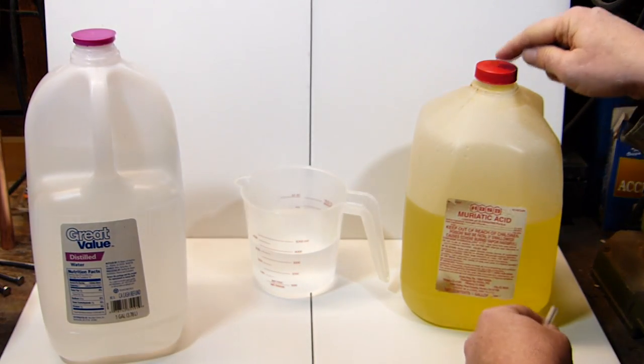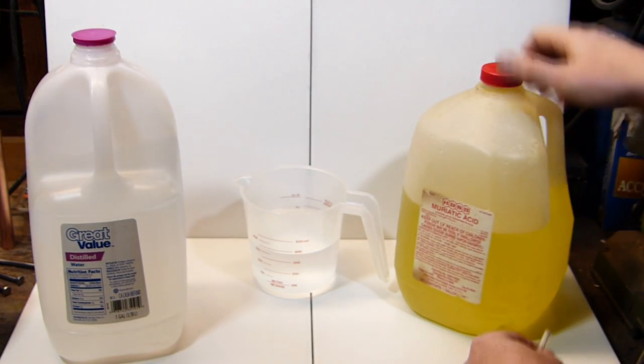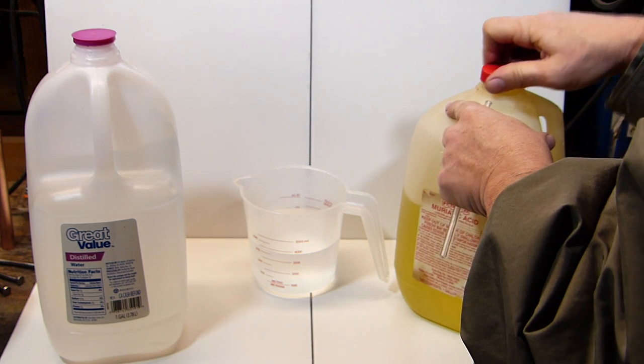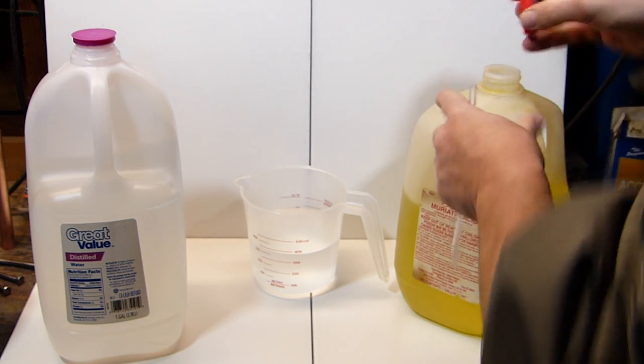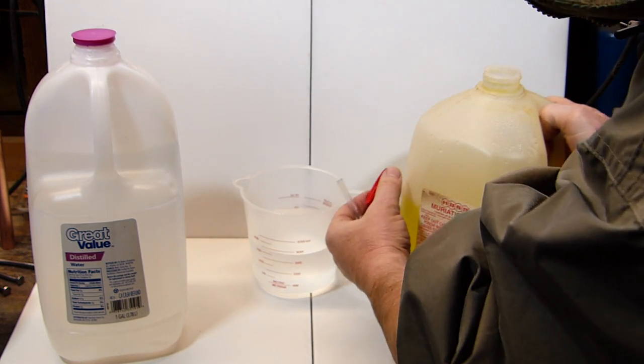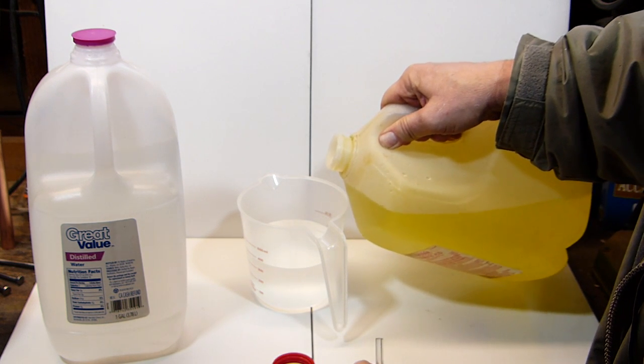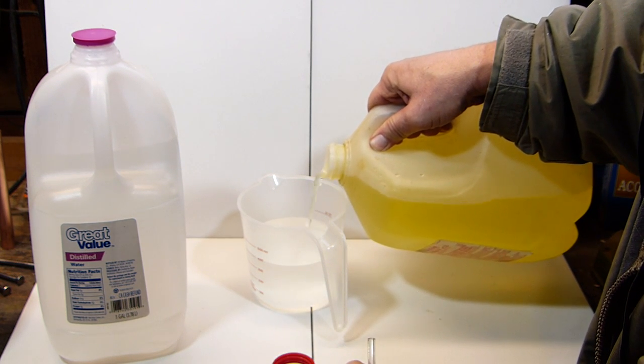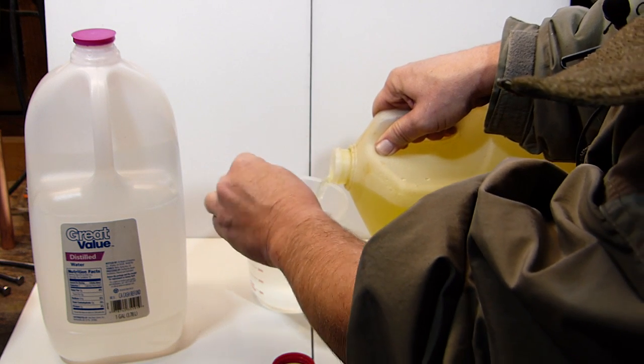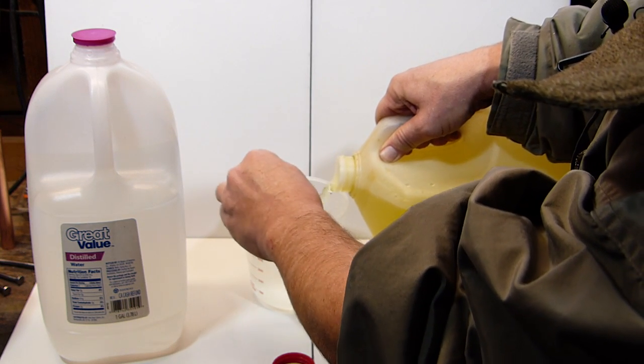Now the muriatic acid is readily available. You can get this at absolutely any hardware store. And this is simply used for when you want to change the pH in a swimming pool. So everybody's got it. So let's add one part. Now you will always add acid to water. You will never add water to acid.